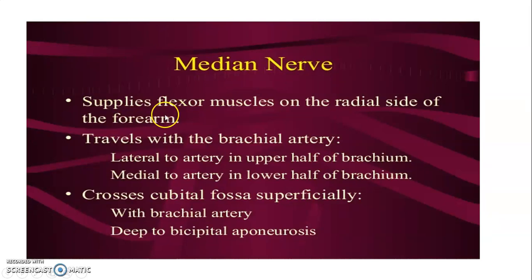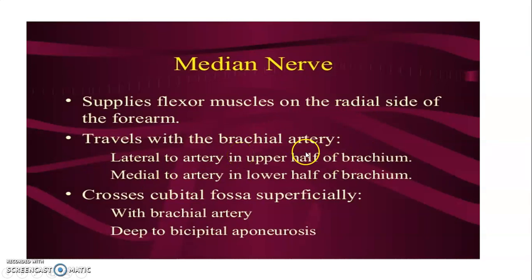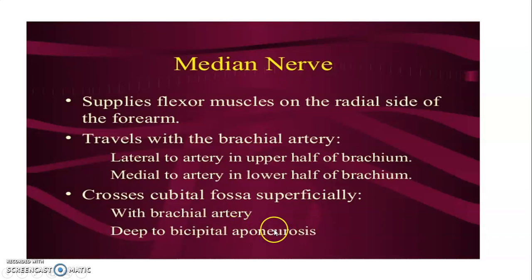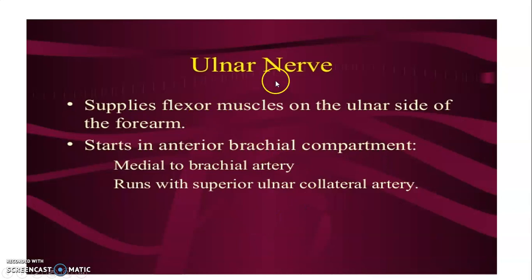The median nerve supplies the flexors on the radial side of the forearm. It travels with the brachial artery — first lateral to it in the upper half of the arm, then medial in the lower half. In the cubital fossa it is found superficially with the brachial artery, deep to the bicipital aponeurosis, which protects it from injury during venepuncture of the median cubital vein.